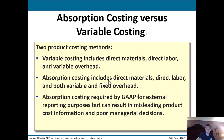Absorption costing includes direct materials, direct labor, and both variable and fixed overhead — that's probably what you're used to up to this point. Variable costing includes materials, labor, and only the variable overhead. Absorption costing is what's required by GAAP — generally accepted accounting principles — for external reporting purposes. But this can sometimes result in misleading product cost info and poor managerial decisions, so some companies internally will use variable costing methods.